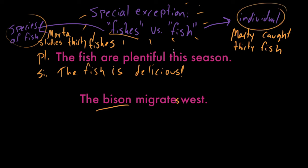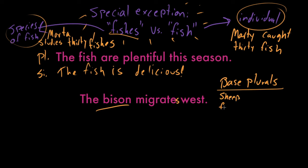Fishes refers to species; fish refers to individuals. That's how you'd use them in the plural. To review, there's this entire class of words called base plurals, where the word itself — the base — doesn't take an S for the plural. The singular is the same as the plural. So that gives us words like sheep, fish, and bison. There aren't a ton of English words that behave this way. I just wanted to make you aware of some of the most common ones — there are also more examples in the exercises. You can learn anything. David out.